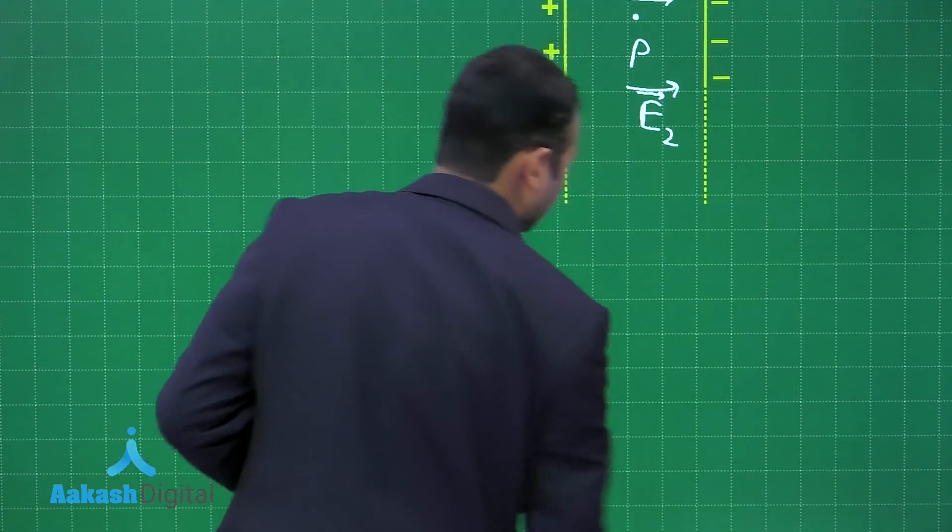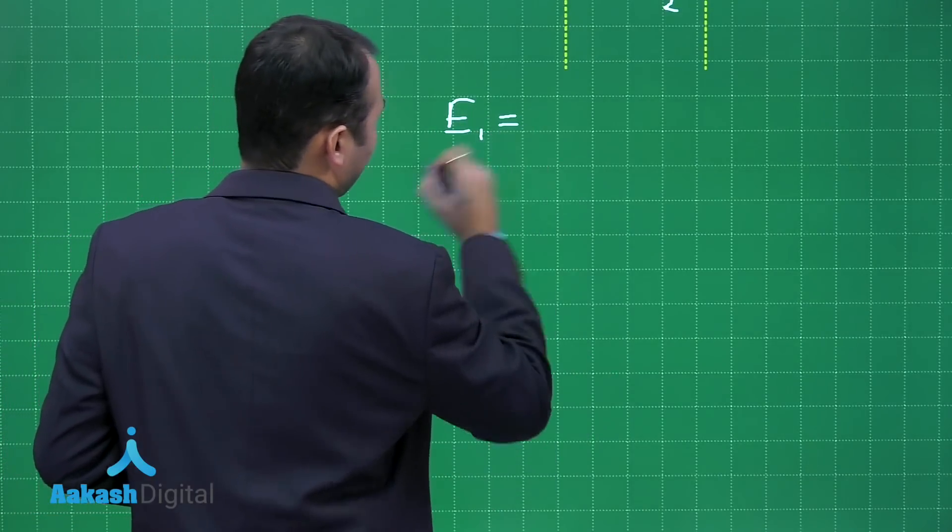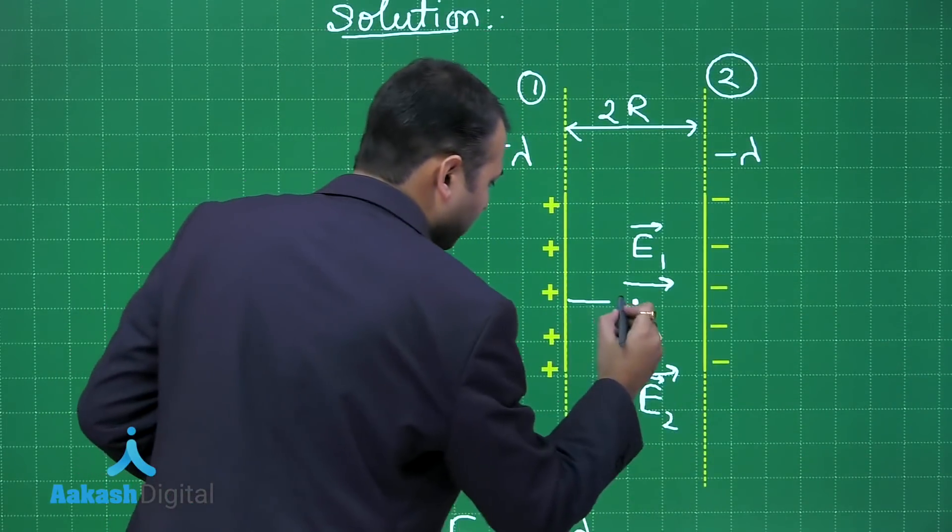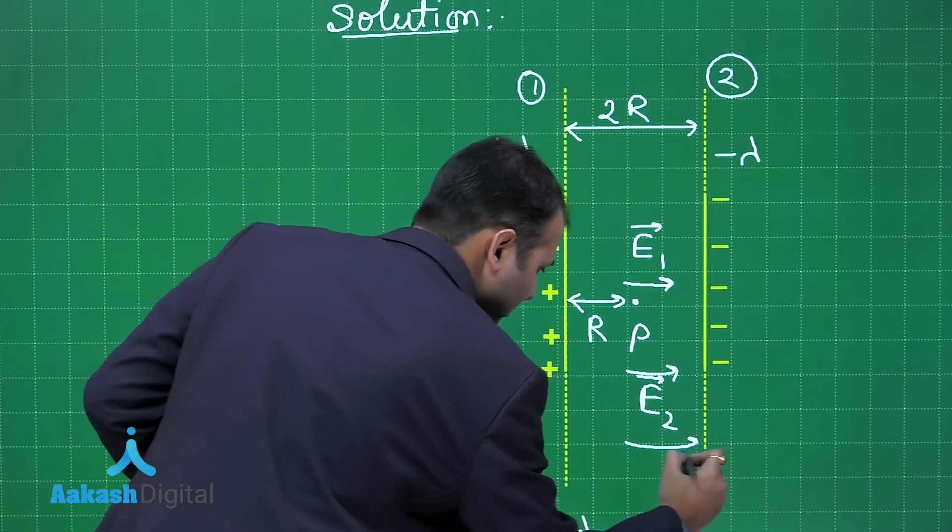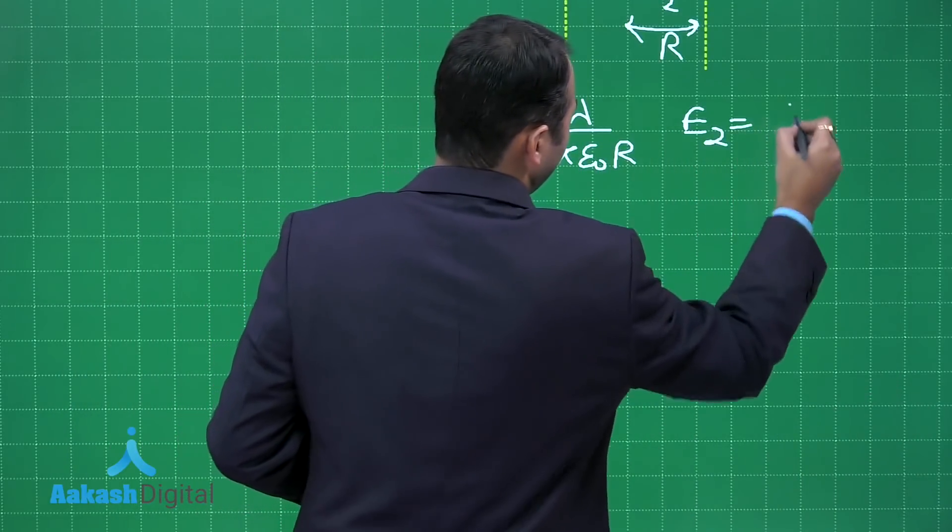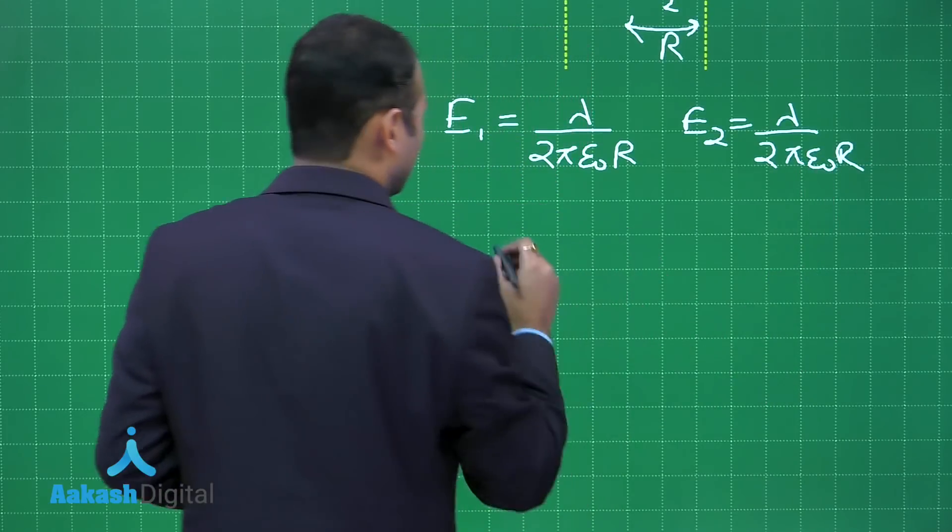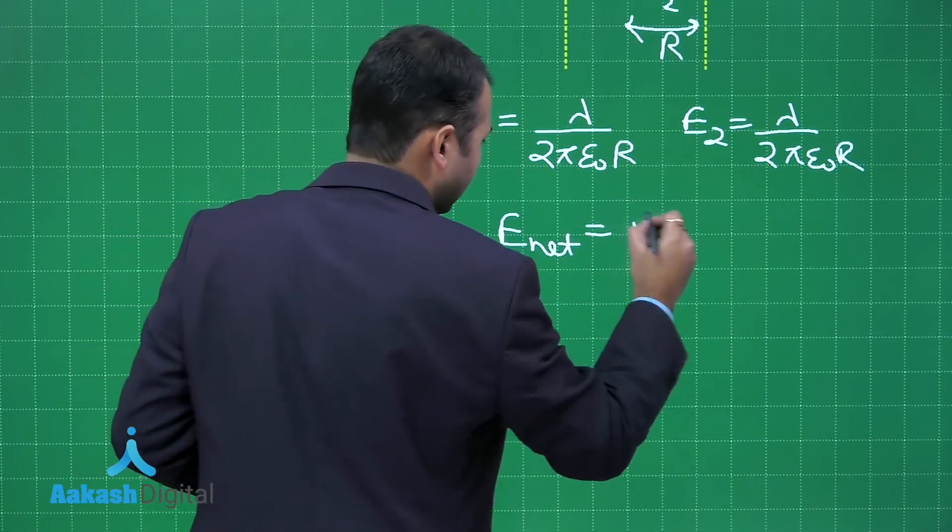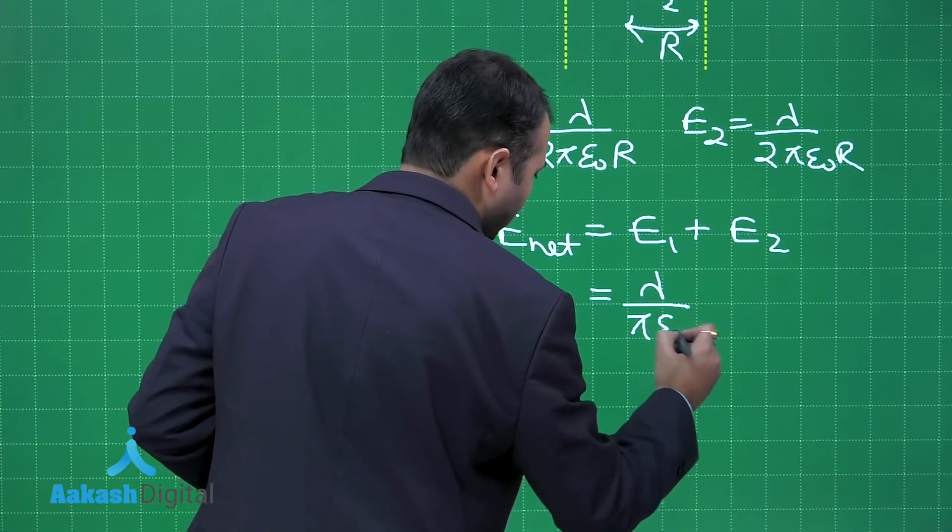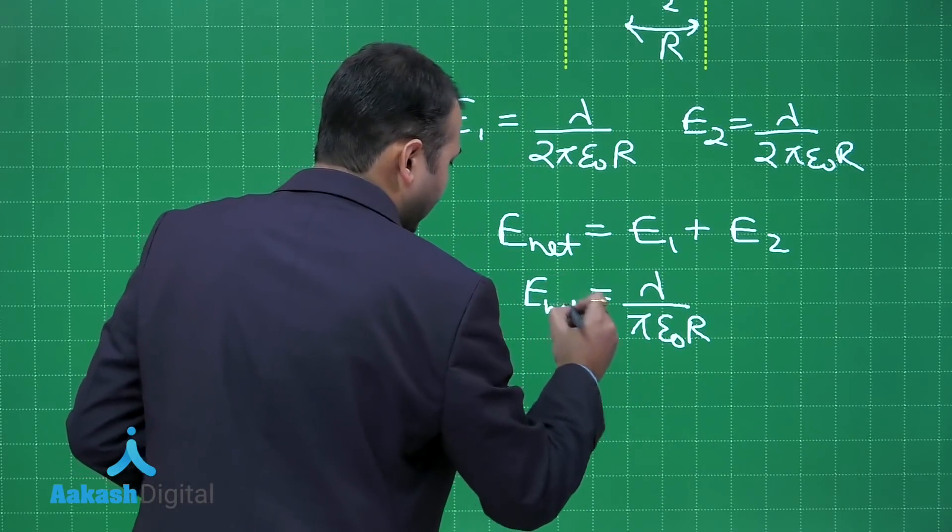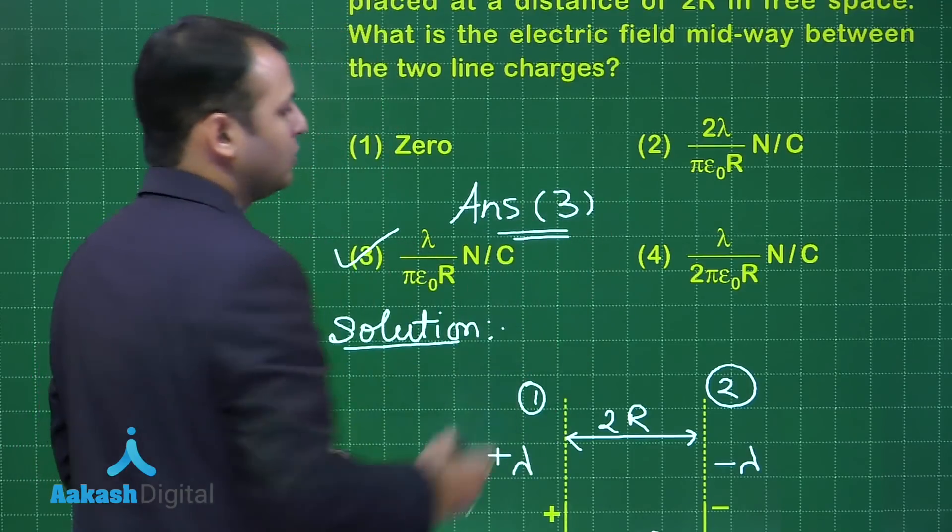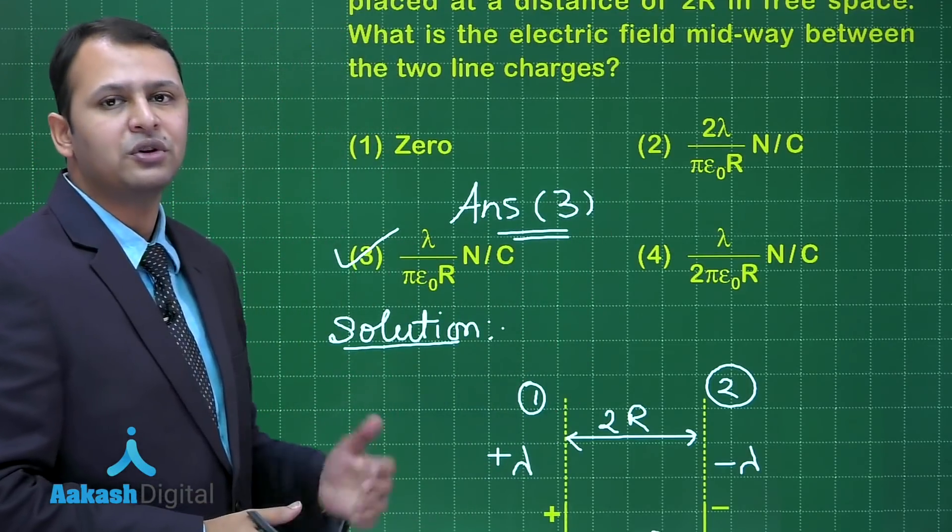What is the formula for E1 and E2? E1 would be, magnitude would be λ upon 2πε₀R, why R? Because the distance between point P and any one sheet would be R. So magnitude of E1 would be this, also E2 would be λ upon 2πε₀R. So net electric field which is acting would be E1 plus E2, so this will be λ upon πε₀R. Among the four options given, yes this is the right answer, option number 3. I hope you have understood the question very well.